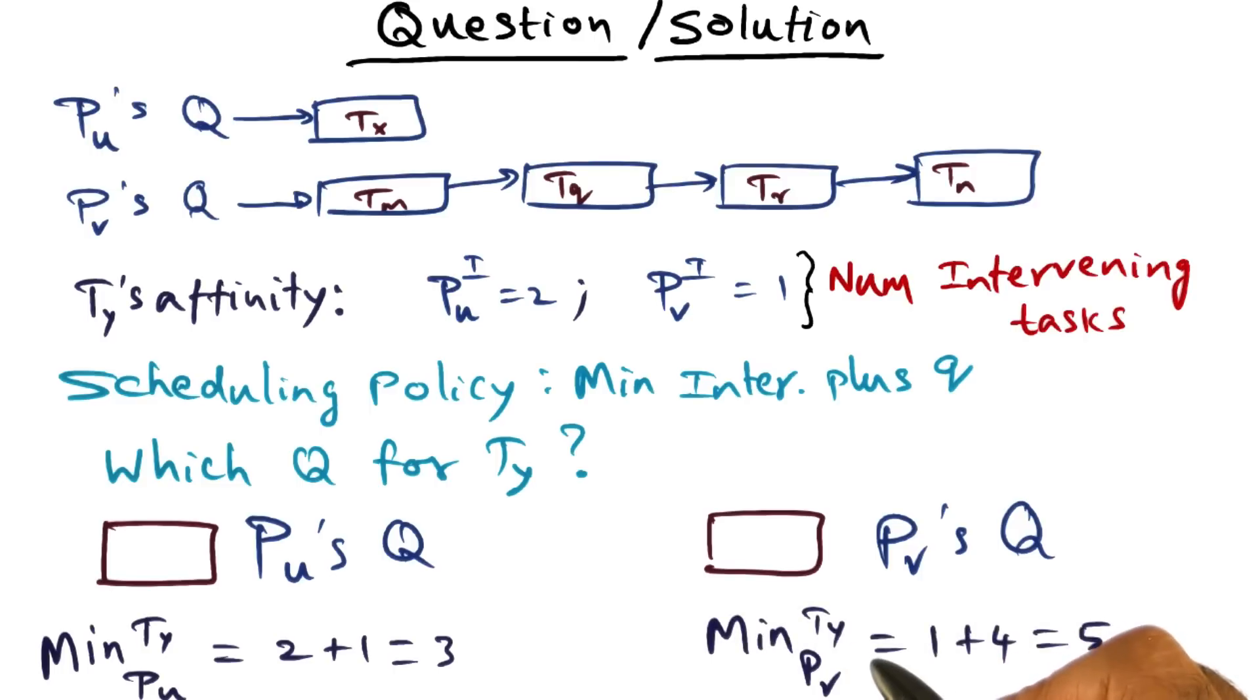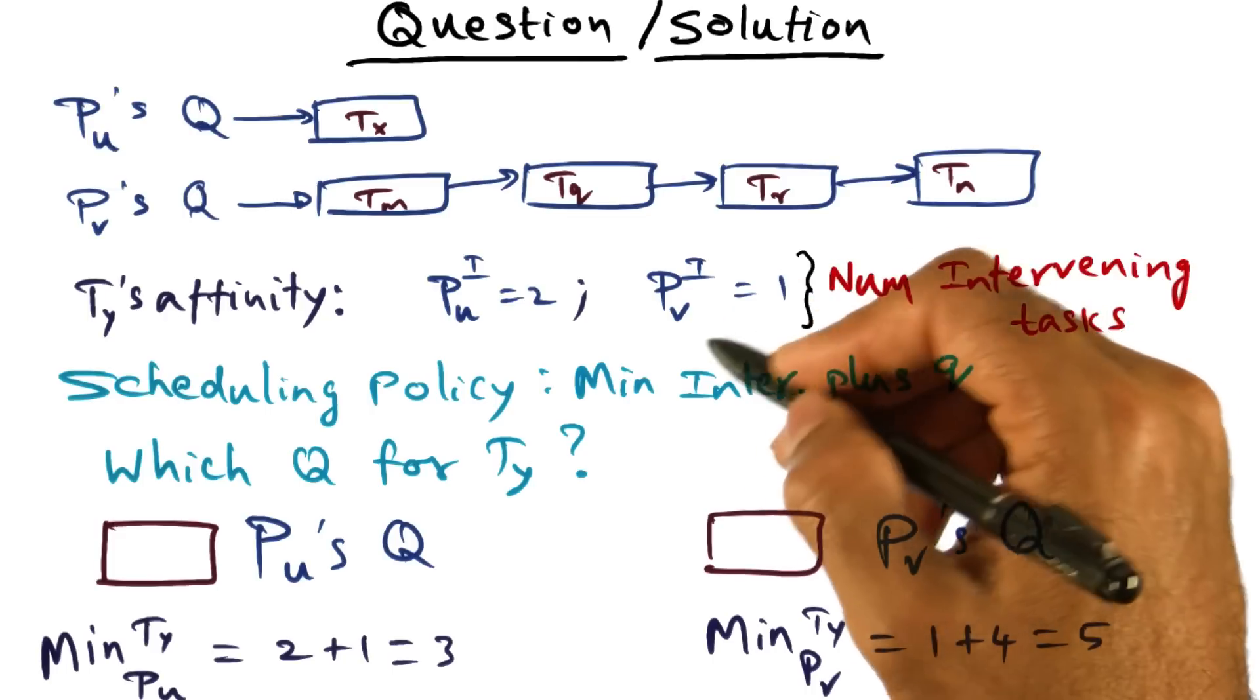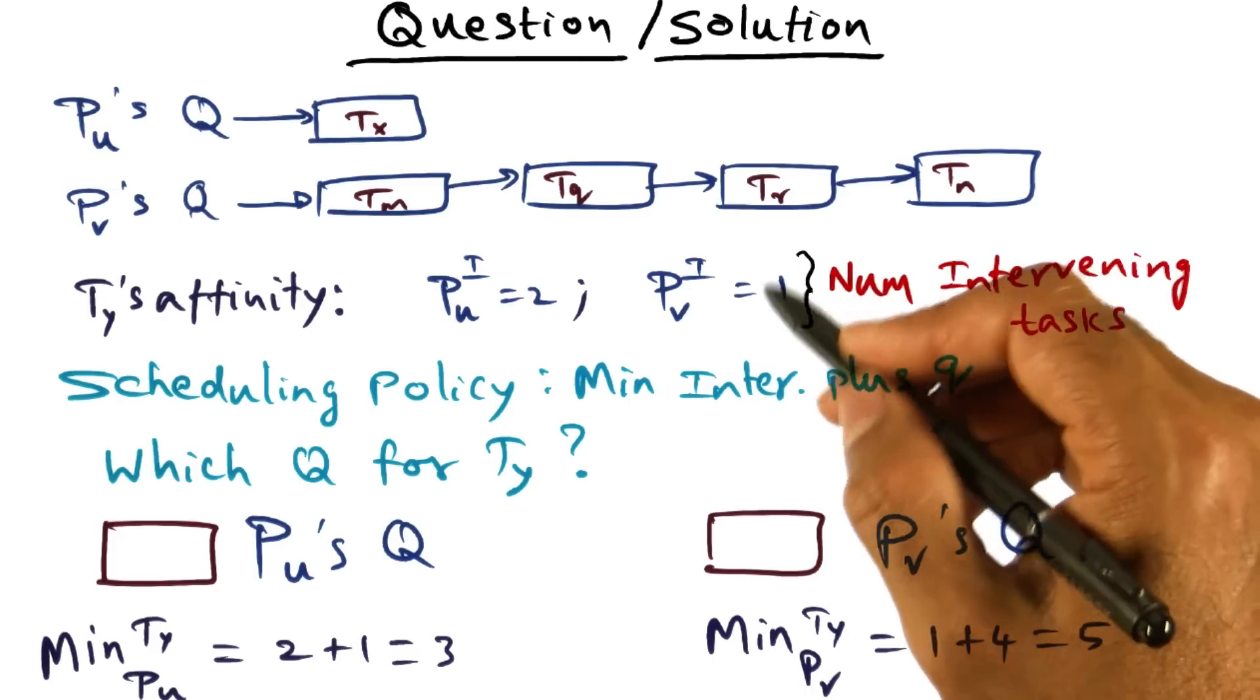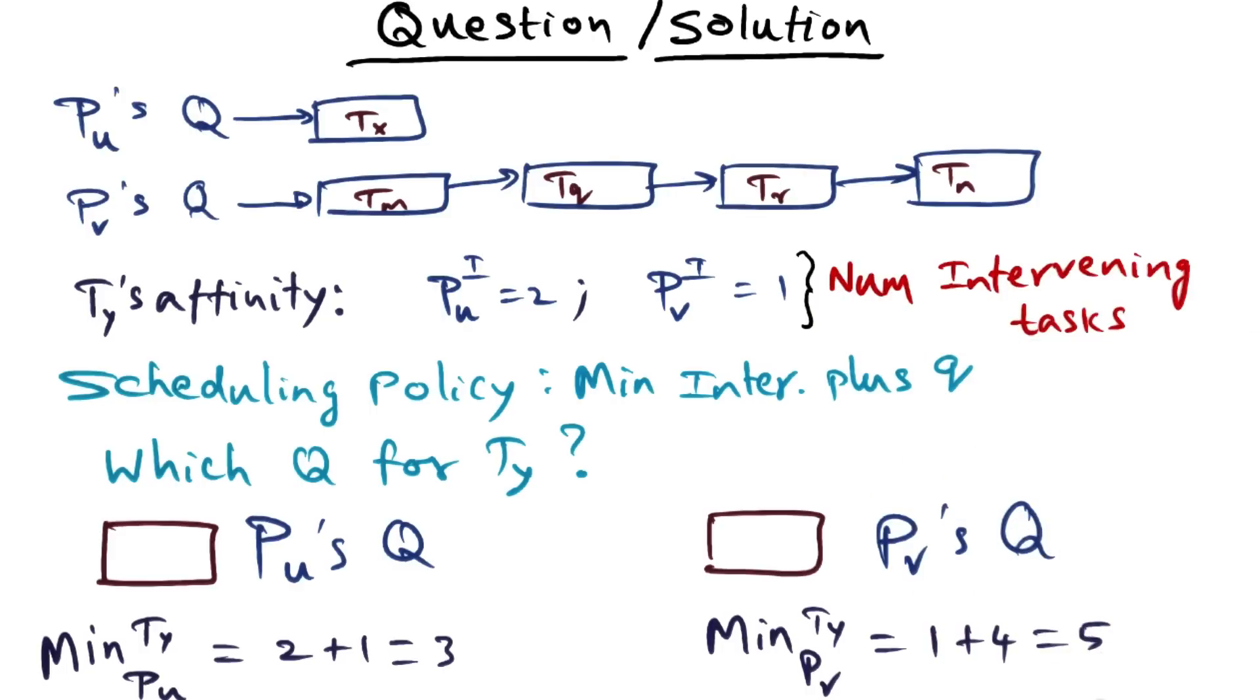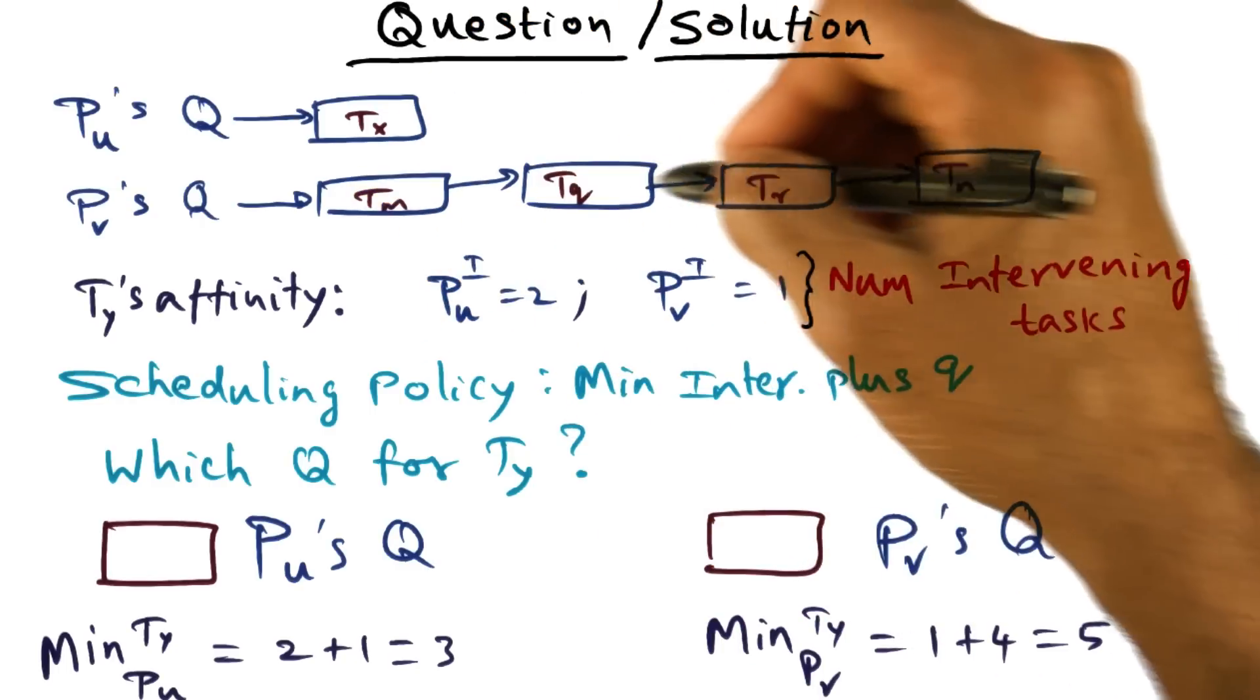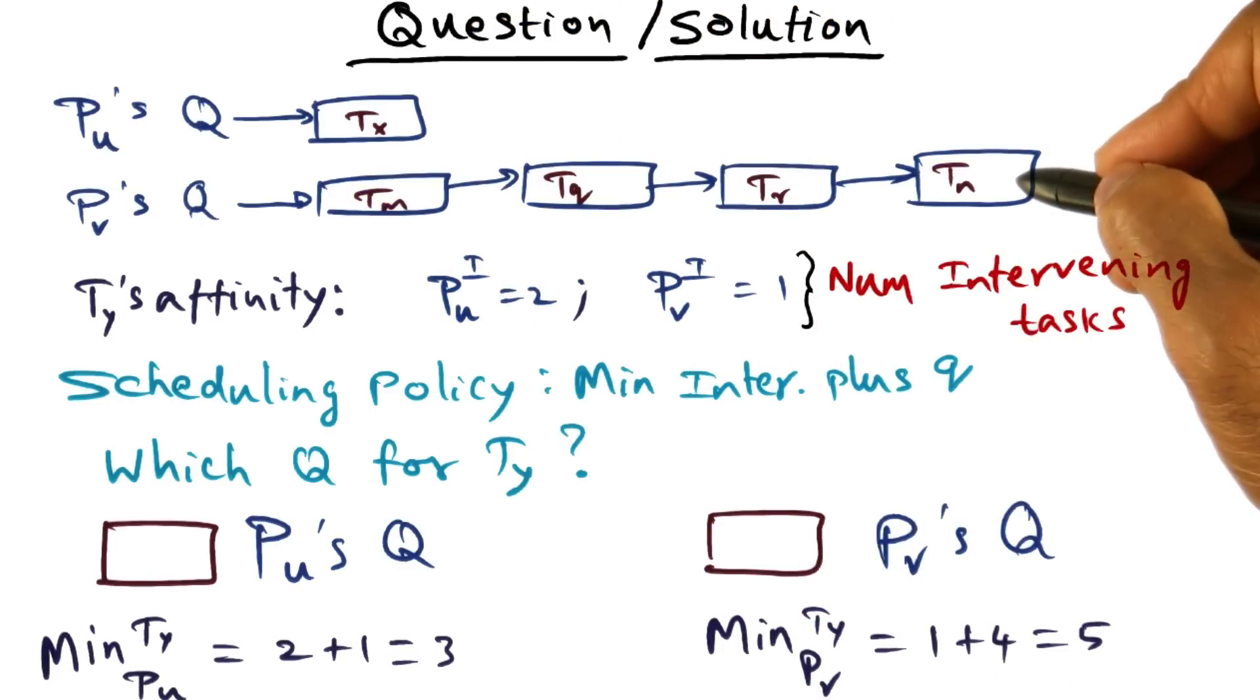Let's do the same thing for ty on pv. In the case of pv, its affinity apparently is higher because there's only one intervening task that ran since the last time ty ran on it. That's good news. But we also have to look at the queue of pv. When ty gets put on pv's queue, it has to sit behind whatever may be already there. And in the case of pv, the queue already has four threads to run.